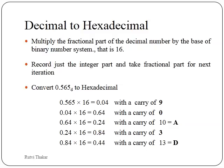0.24 is again taken for the next multiplication iteration. 0.24 multiplied by 16 gives 3.84, with carry of 3. 0.84 multiplied by 16 gives 13.44; the value 13 is equivalent to D in hexadecimal. Again we record the carries from top to bottom. So 0.565 decimal converted to hexadecimal is 0.90A3D in hexadecimal.